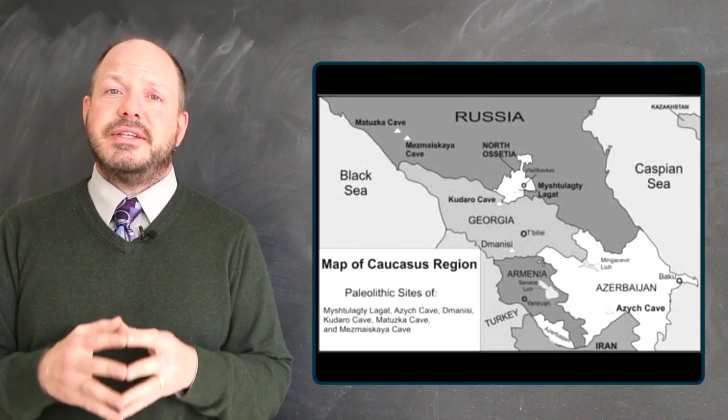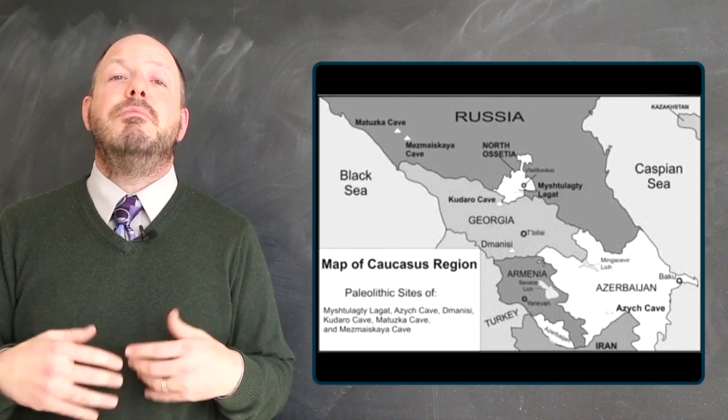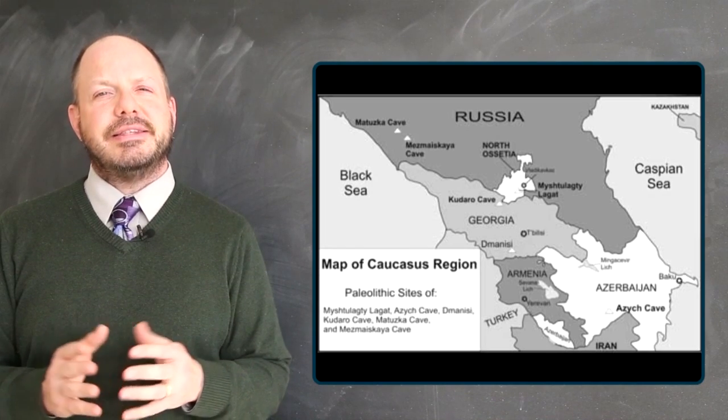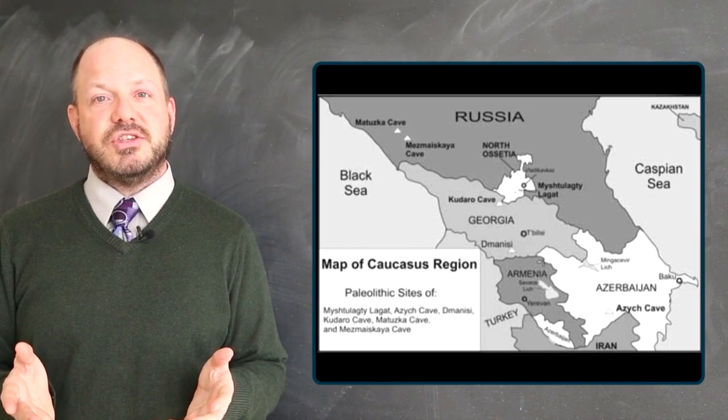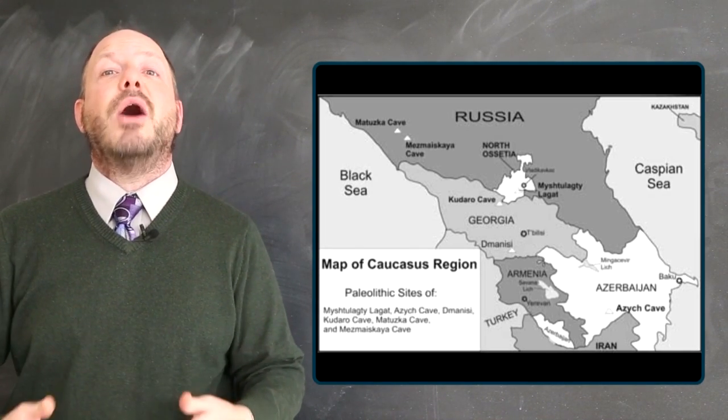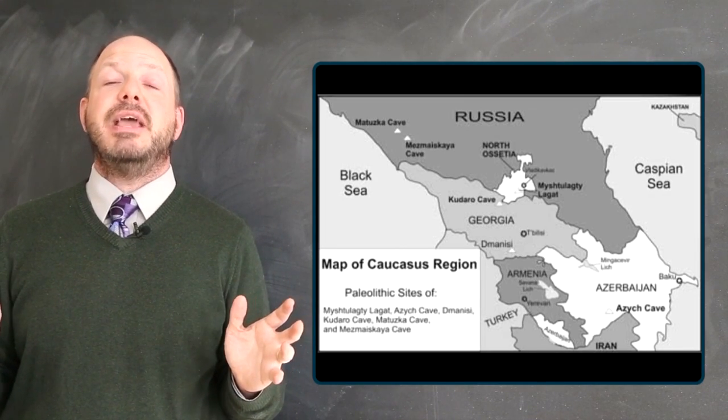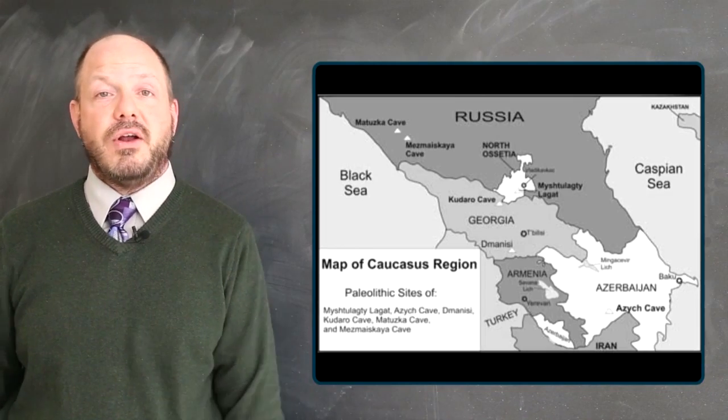The fact that we can show that some Neanderthals are more similar to humans than others is a pretty good sign that some of those Neanderthal populations were contributing to our human population, and other Neanderthal populations may have contributed little or nothing at all.